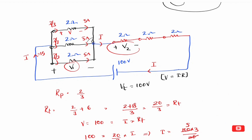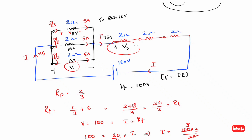Here, 5 amps flow in each parallel branch — here 5, here 5, here 5. So the total is 15 amps flowing. In the 2Ω parallel resistor, what is the voltage drop? V = 5 × 2 = 10 volts. That means here a 10 volt drop occurs. Here 10 volt drop, and this total parallel combination also has a 10 volt drop.